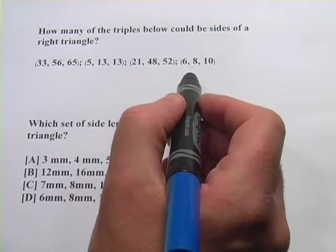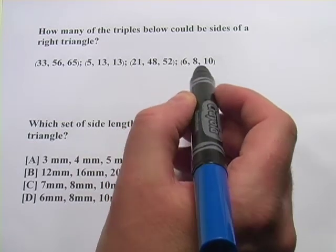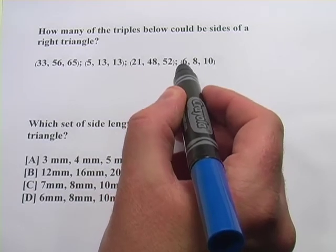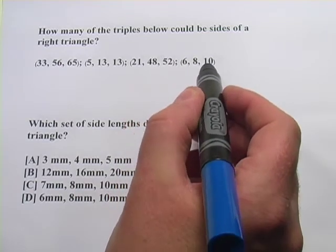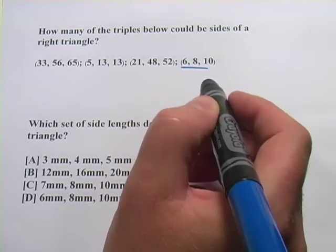Well the first one that jumps out at me is this 6, 8, 10. And this is a multiple of a 3, 4, 5, which is definitely a right triangle. 6 divided by 2 is 3, 8 divided by 2 is 4, 10 divided by 2 is 5. So this one is a right triangle. So there's one for sure.